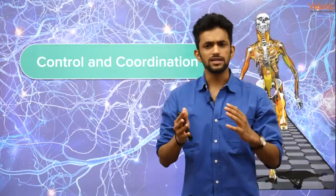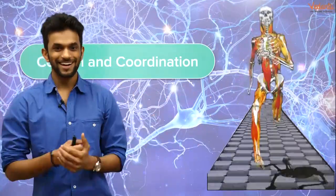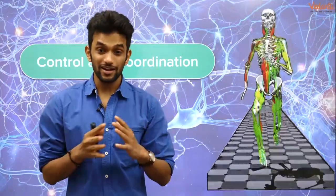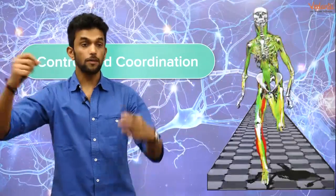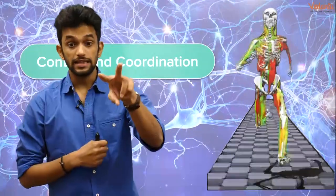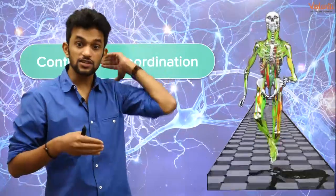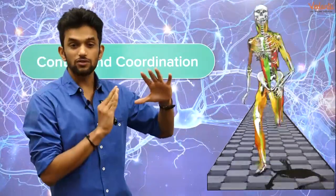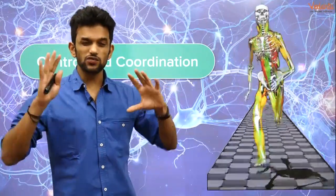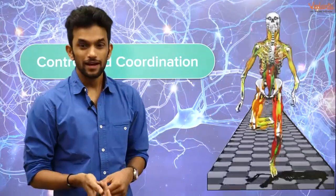Now let's talk about control and coordination. What do we mean by control and coordination? It's about how I control my body — my arms, what I'm talking, what I'm seeing, where to walk, when to sleep, why I grow up to a particular height and then stop. Our body is a very complicated machine, and we are going to get a little glimpse of how complicated we are.